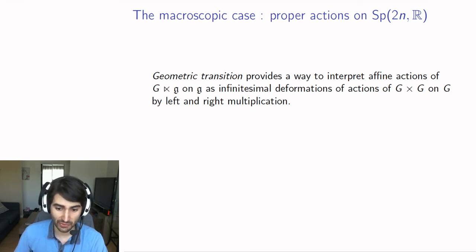Densiger-Gerito-Cassel in their papers do use and formalize this idea through geometric transition. They show that when you have a proper action on the Lie algebra of SL2R, it comes from a proper action of g cross g on g by taking its derivative.